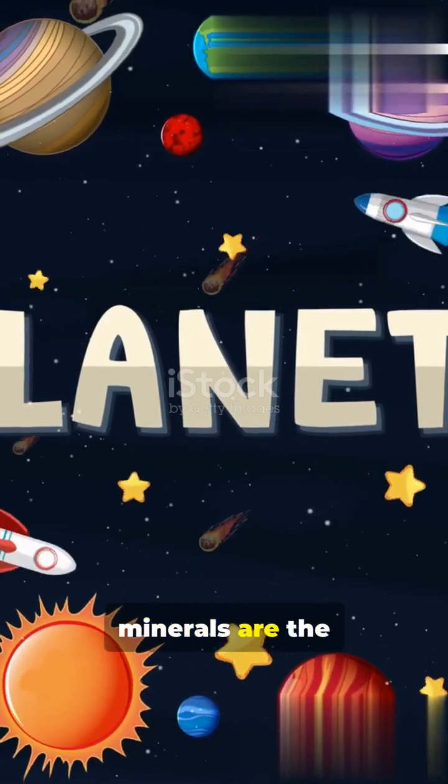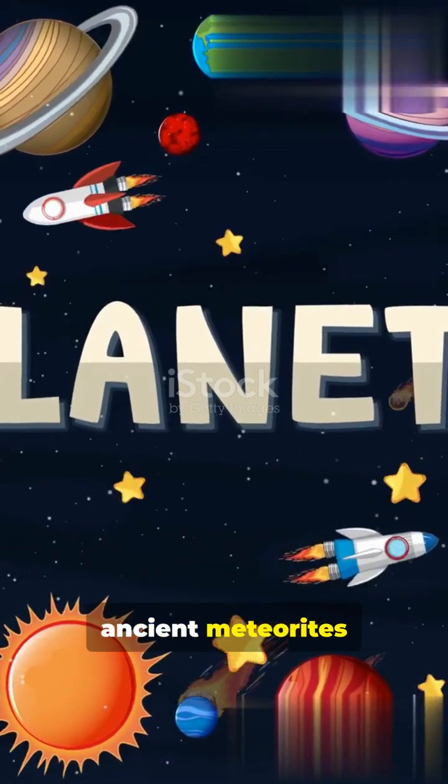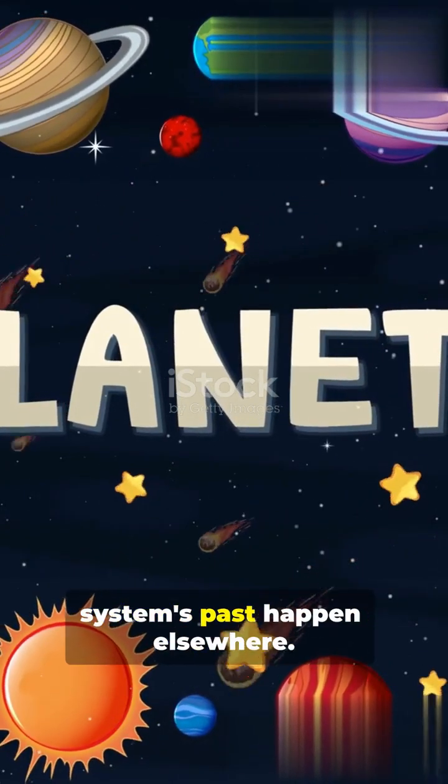These crystalline minerals are the exact same kind found in the most ancient meteorites here on Earth, meaning we're seeing our own solar system's past happen elsewhere.